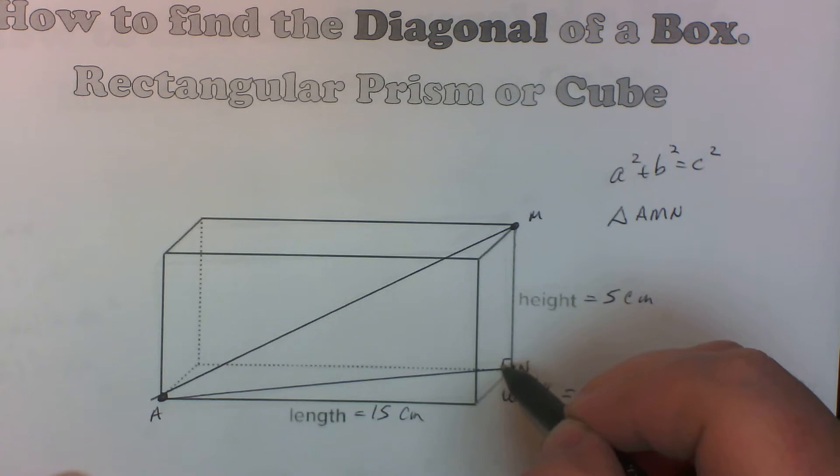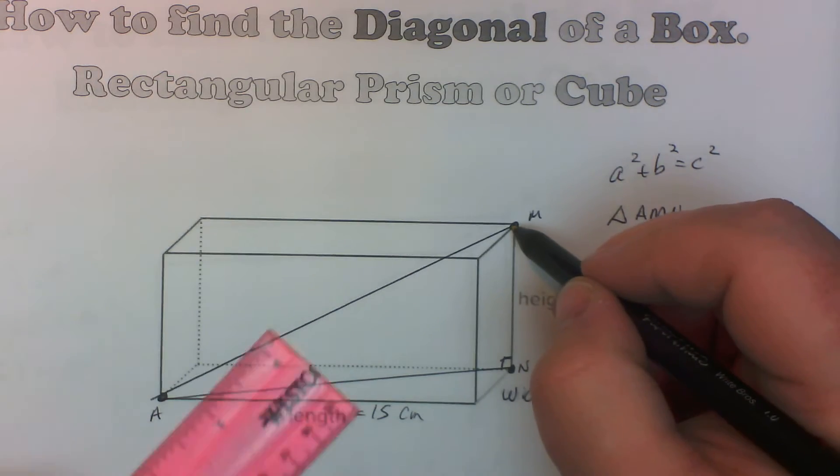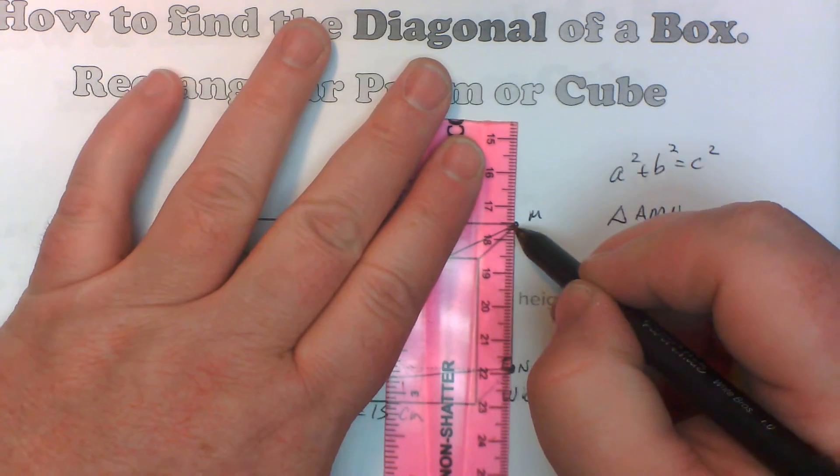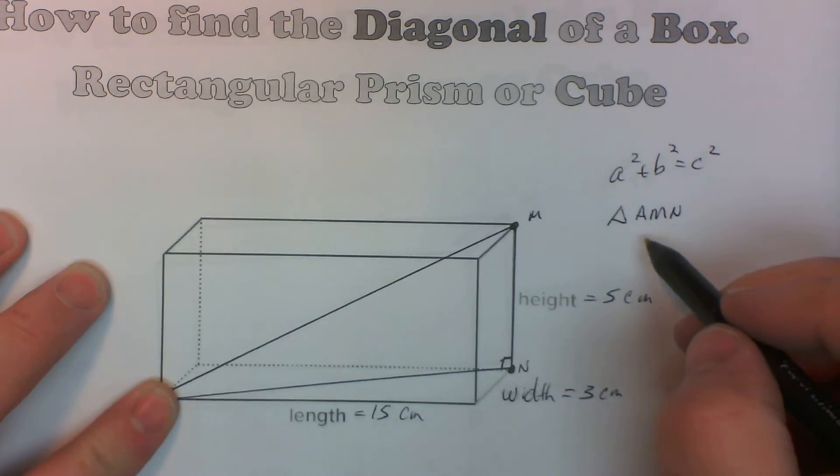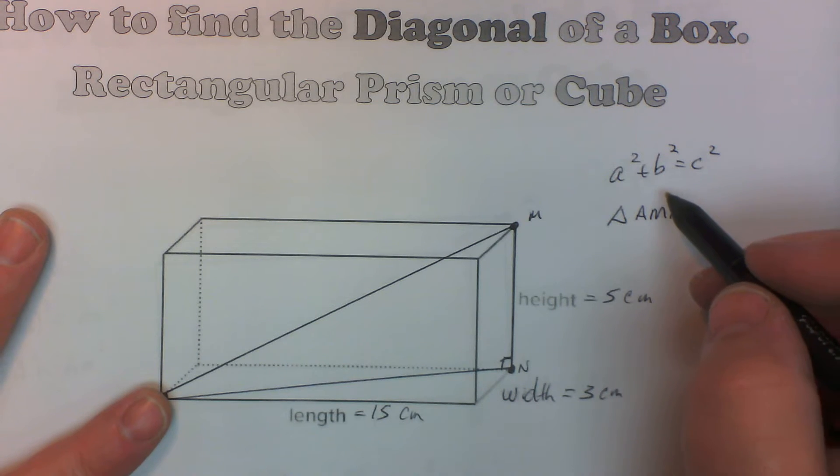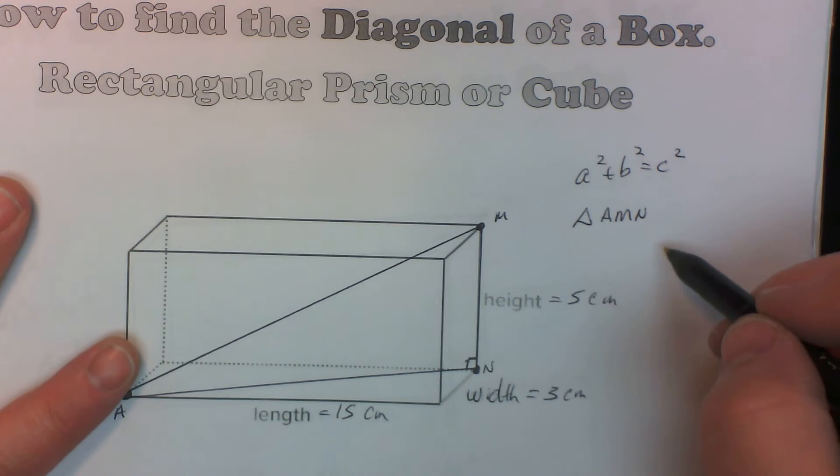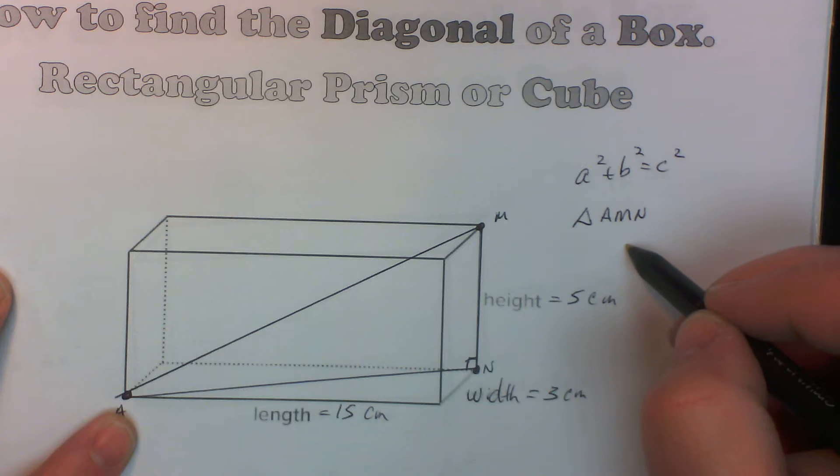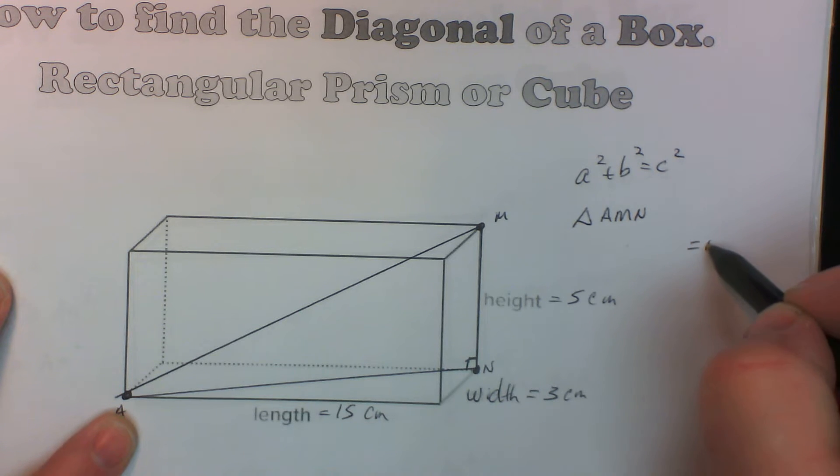Now, that is going to be a right angle right there and so we're going to have to figure out what this is right here. So if I use the Pythagorean theorem for this, here's what we're going to have. We're going to have the hypotenuse which is C, right? So equals AM squared. That's the longest distance.